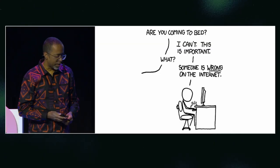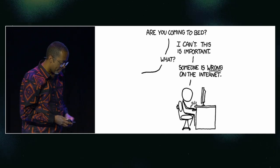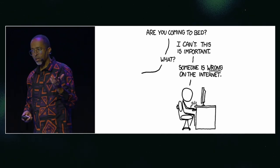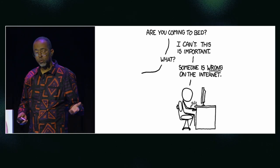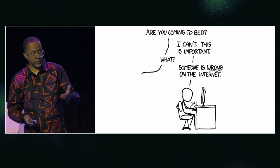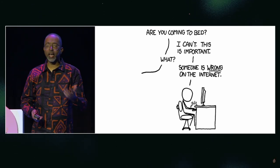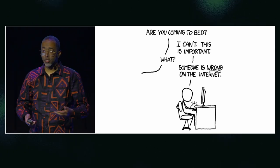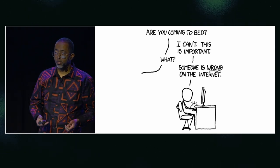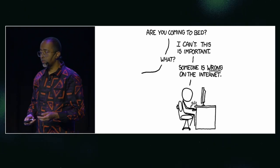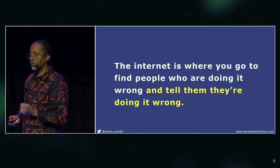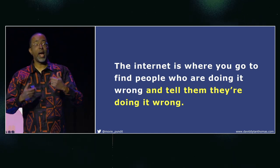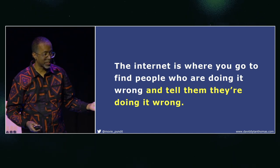To put it another way: if aliens were to come down and try to guess the purpose of the internet by observing us use it, they would quickly conclude that the internet is where you go to find people who are doing it wrong and tell them they're doing it wrong.